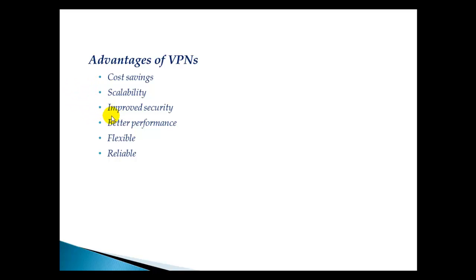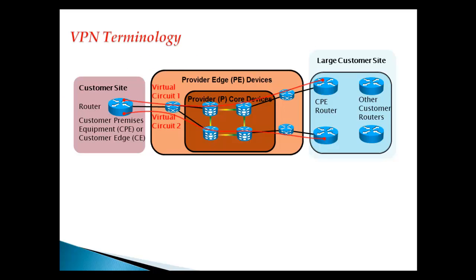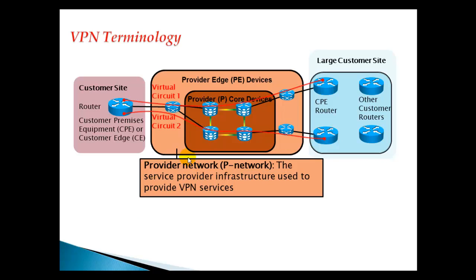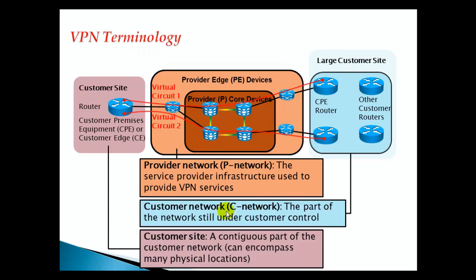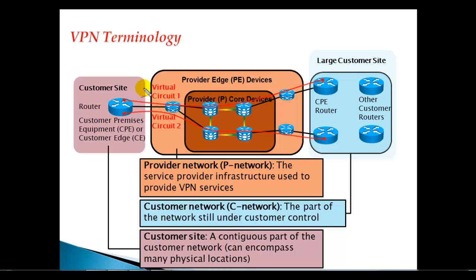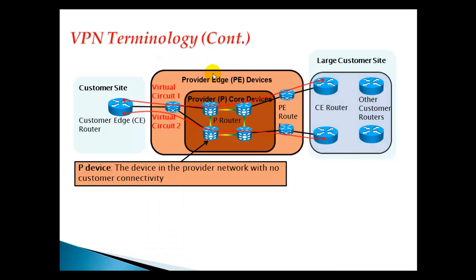Next we'll understand the terminology of VPNs. The service provider network is called the P network — the provider network — which is the service provider infrastructure providing VPN services. Then you have the customer network, which is the complete network under customer control, and the customer site, which is a part of the customer network. A customer can have multiple sites.